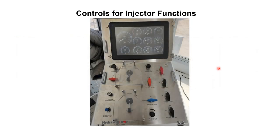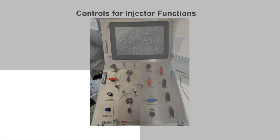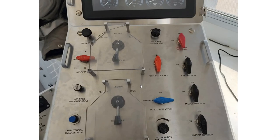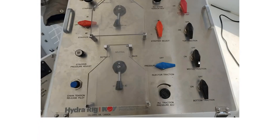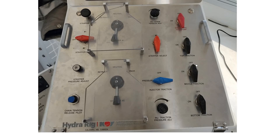In addition to these knobs, here we have tension and traction pressure adjust for the injector head. There are three knobs for traction adjust: top traction, middle traction, and bottom traction. Here is the injector traction pressure control or pressure adjust. Then we have the injector chain tension pressure adjust and the chain tension release pilot. These are the controls for the injector tension and traction.